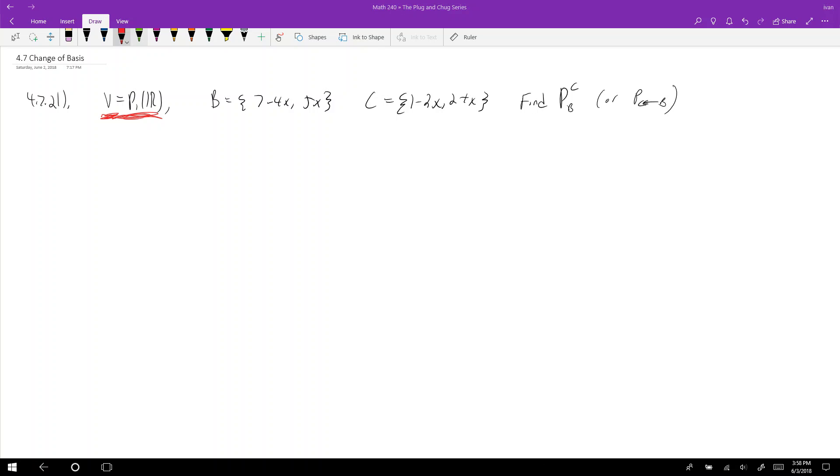And B then is a basis for P1R, which means that I can express any polynomial in terms of this basis. Which means, like for example, the polynomial 7 plus x is equal to 1 times 7 minus 4x plus 1 times 5x. So here's a basis, and here's a basis element. And in basis B, this is actually equal to (1,1) in basis B. And that's because this 1 goes here, and this 1 goes there.